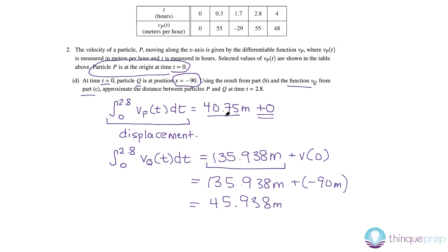And then if we want to find the total distance between the two points, since they're just on a line, we're just going to find this minus this. We go 45.938 minus 40.75. And then we get that the two particles are approximately 5.188 meters apart.